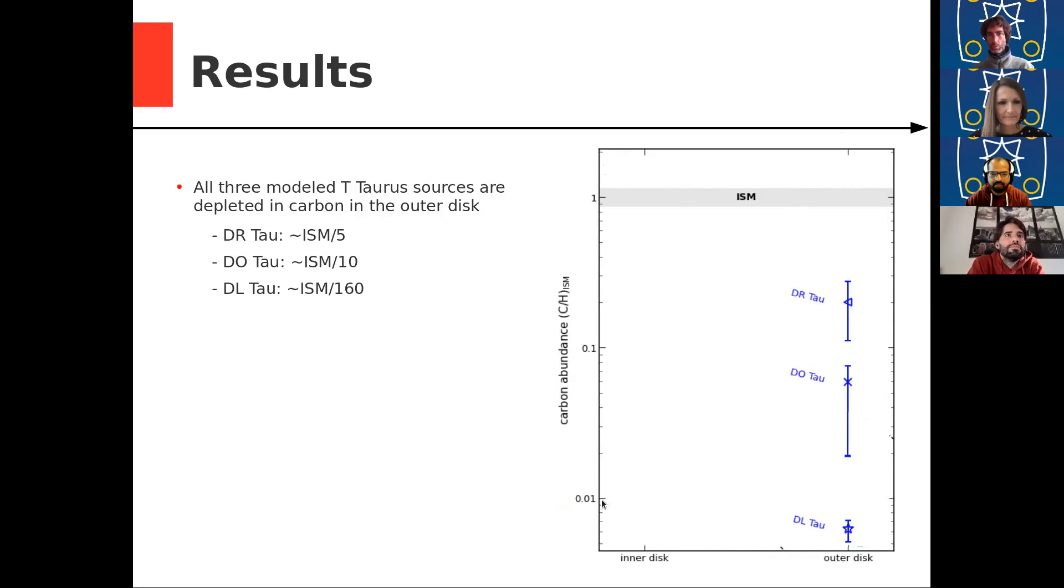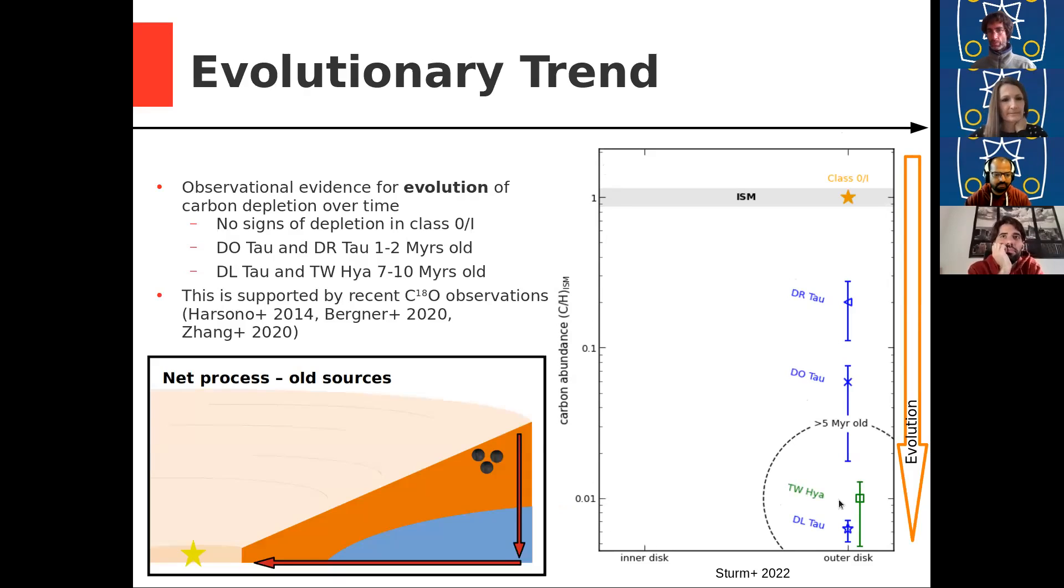So if we plot the three sources that we modeled, the other four sources were contaminated too much with the cloud. So we focused on these three sources. And we can see that there is a low carbon depletion for all the sources. And this is already interesting because it means that there is low carbon-rich ice forming on the grains. And if we add some other sources where we know the carbon abundance in the outer disk, for example, TW Hydra, we can see that there is an evolutionary trend for the carbon depletion over time. So TW Hydra and DL Tau are both pretty old, 10 mega years old, something like that. DQ Tau and DR Tau are much younger, 1 to 2 mega years old. And class 0, class 1 sources, so the sources, sometimes even without the disk, the very young sources where it's not just as formed, we don't see any signatures of carbon depletion at all.